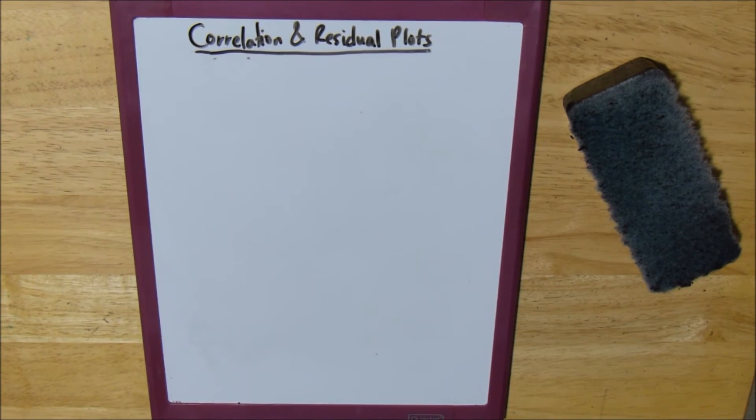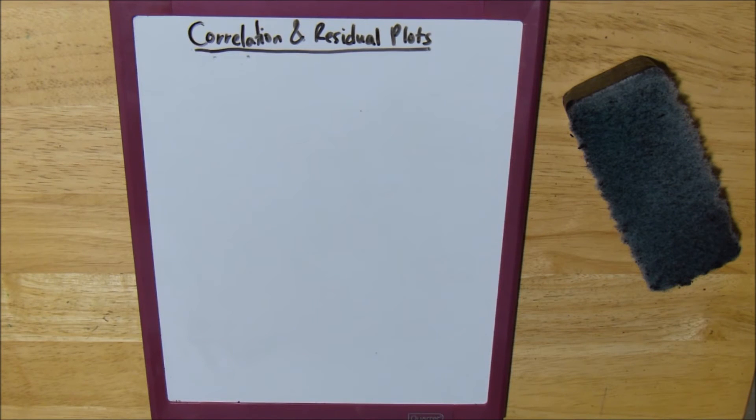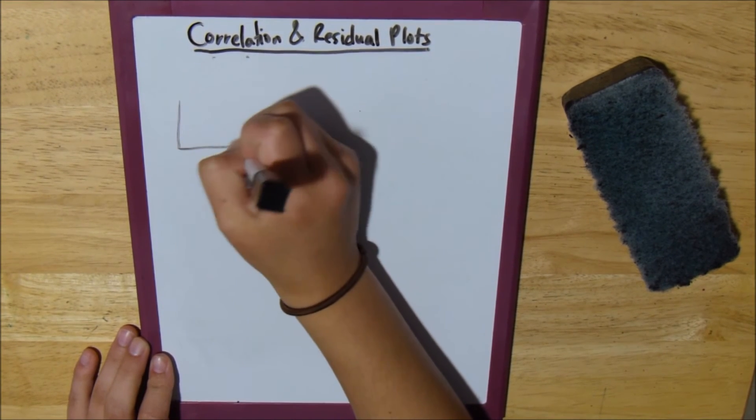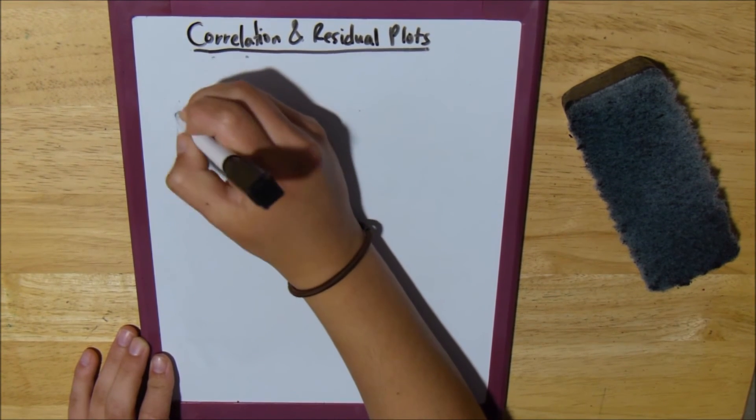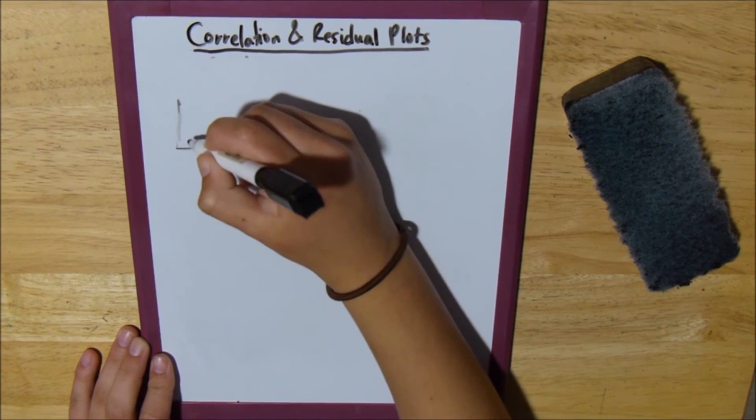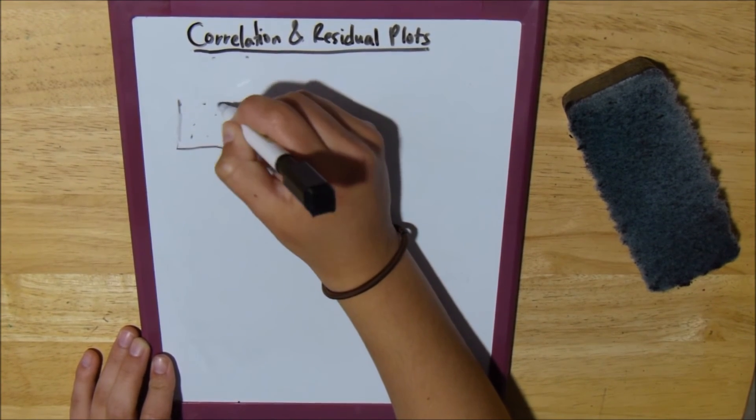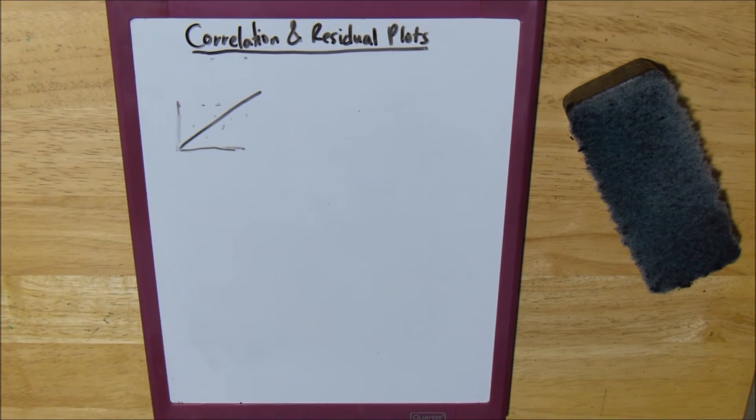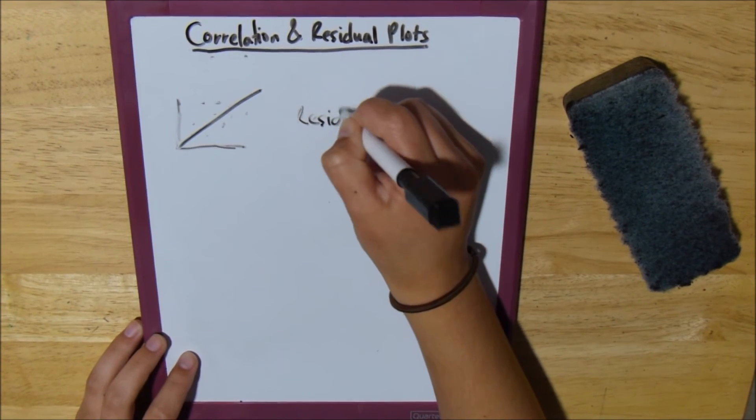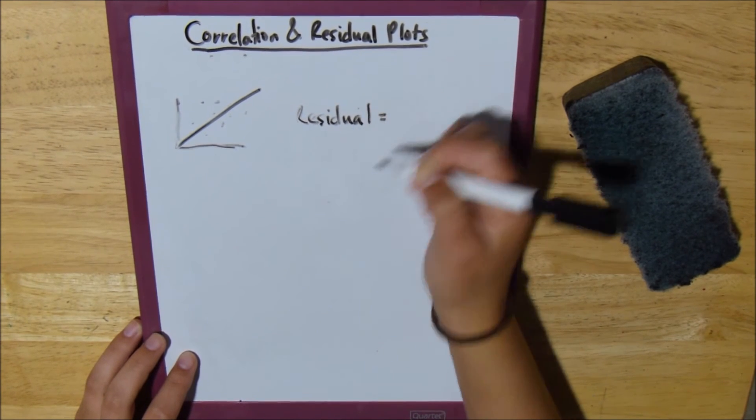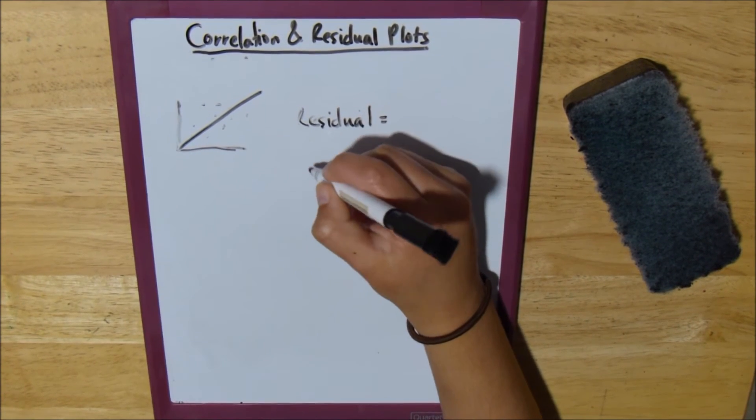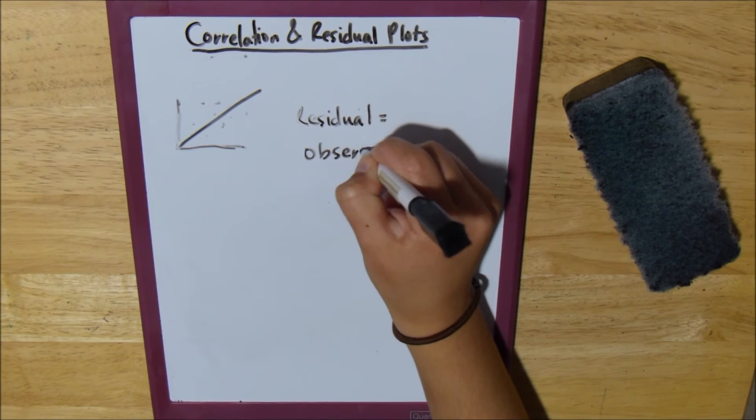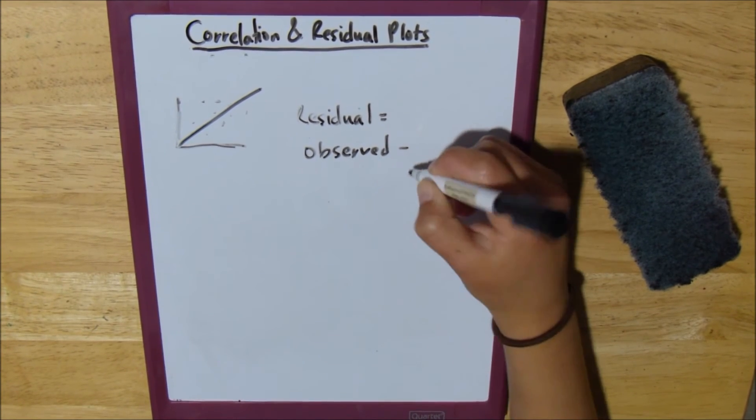Residual plots are basically, if you have a bunch of points all over the place, and you have this line, your residual is the observed minus the predicted.